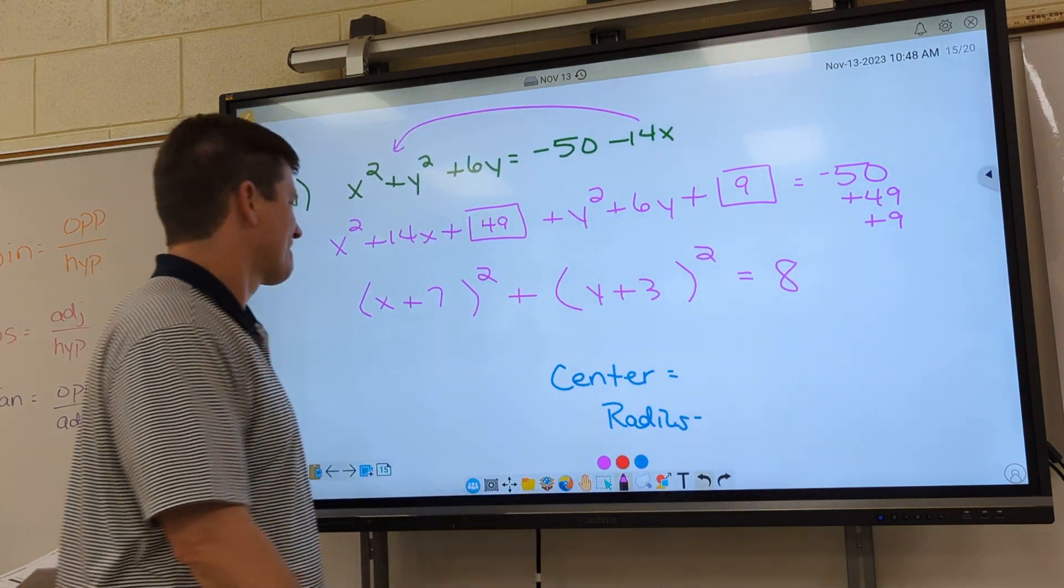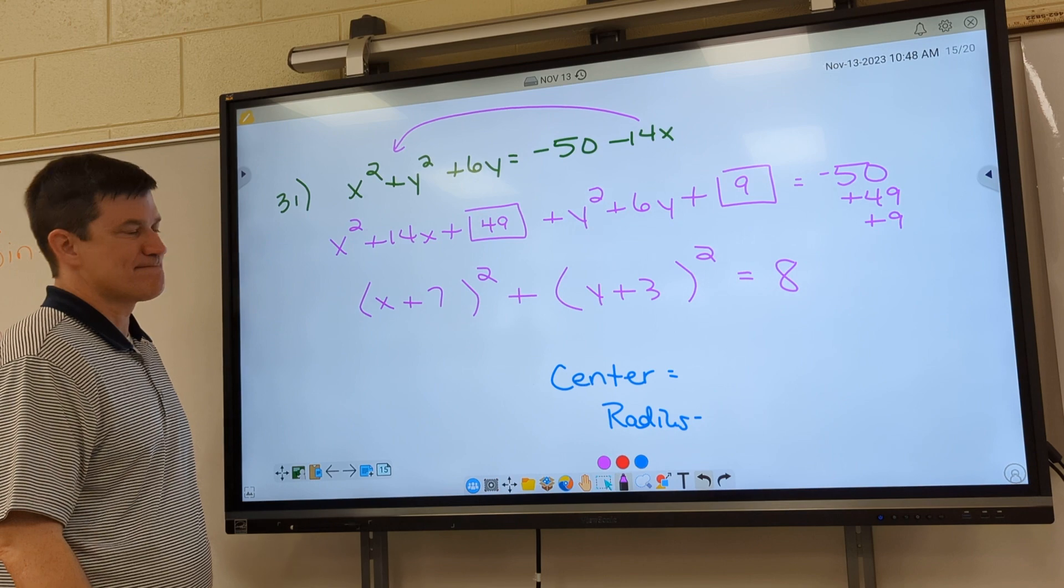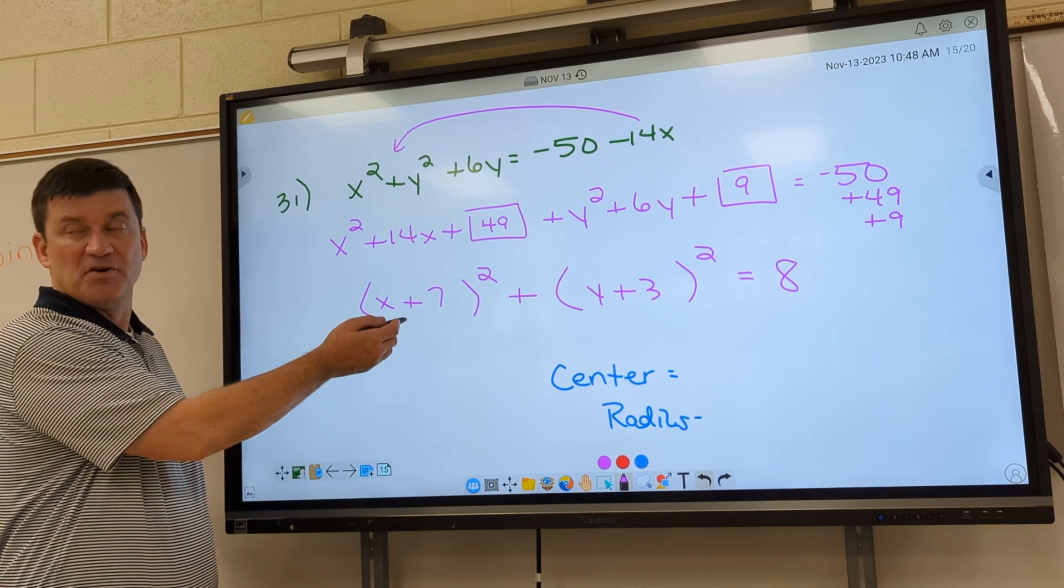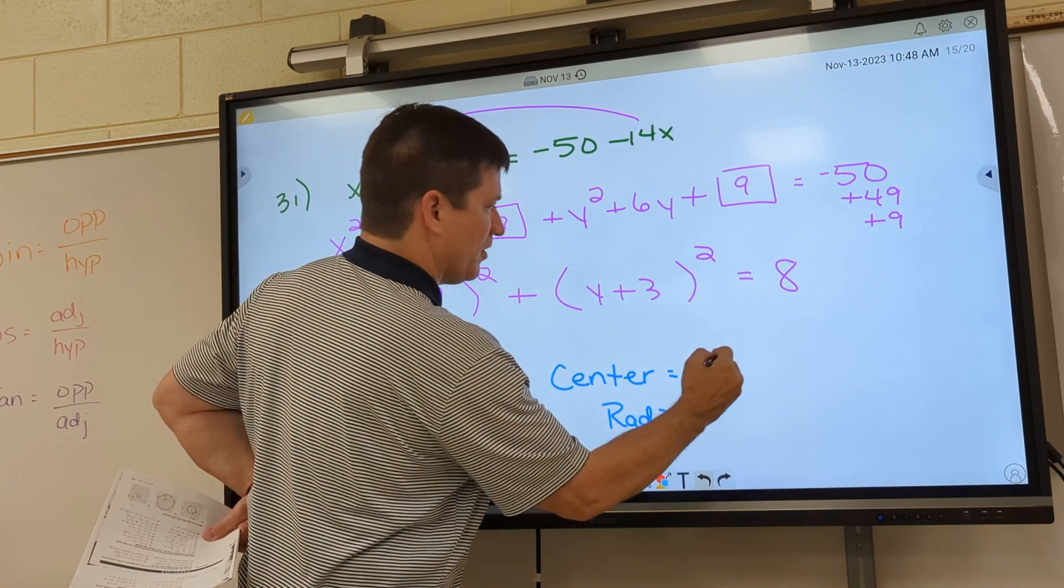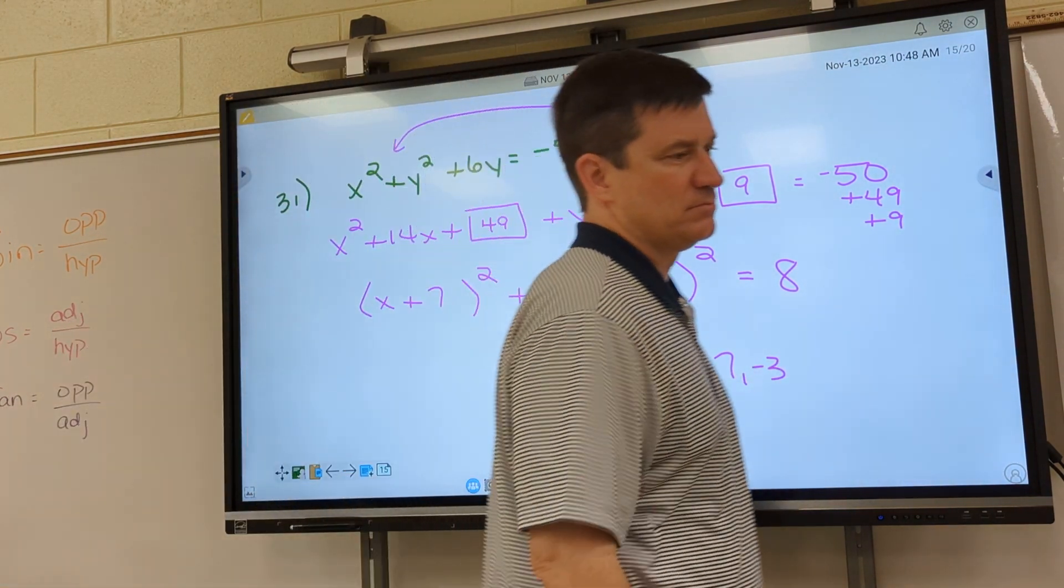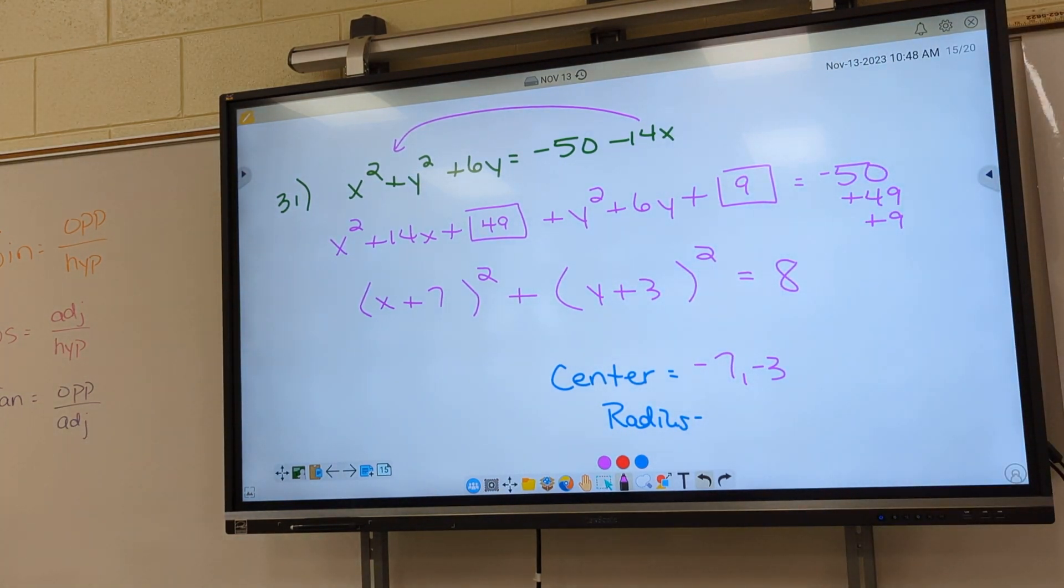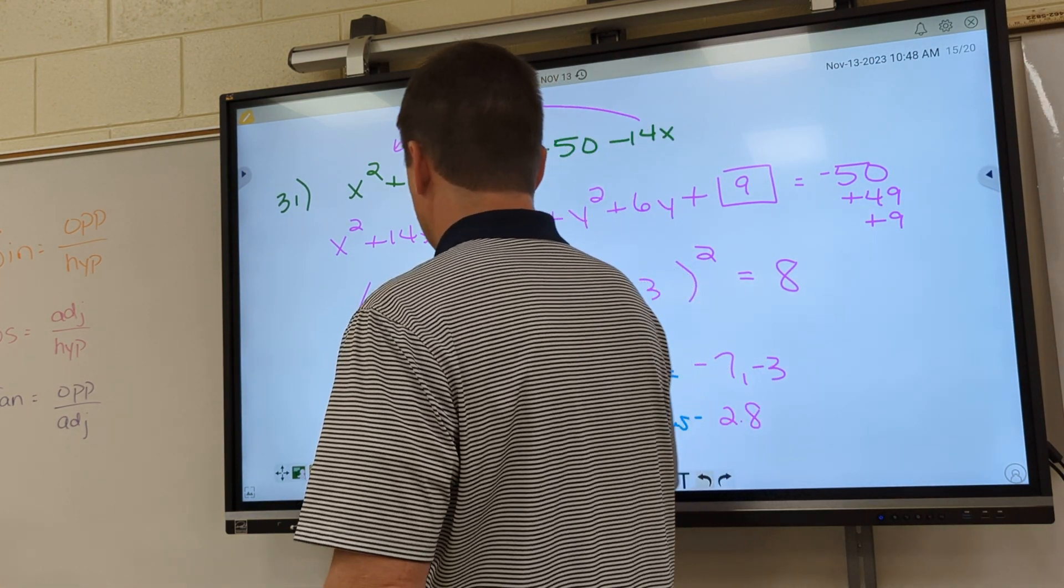All right. Hunter, center. What did you say? Center. What's the center? Oh, negative 7. Negative 7, negative 3. And how do we find the radius? What do we do? Anybody remember? Take the square root of 8 and make it a decimal for me. So I got 2.8. Because if you graph it, you're going to need to know what the decimal is.